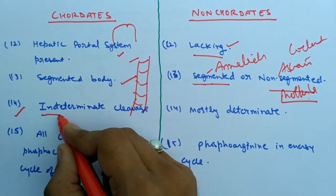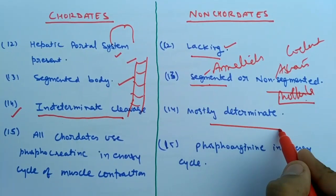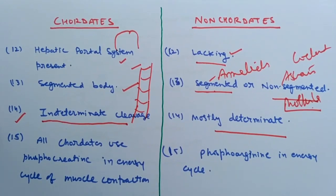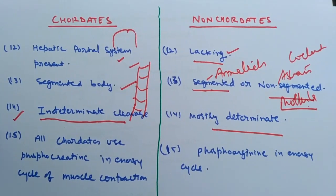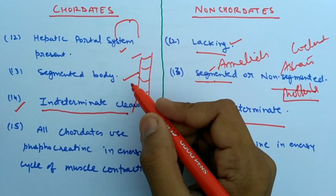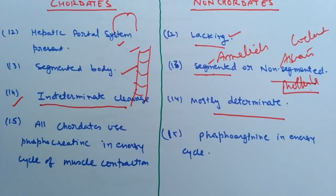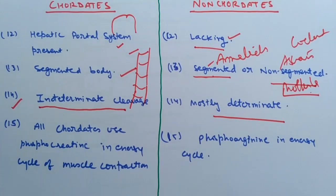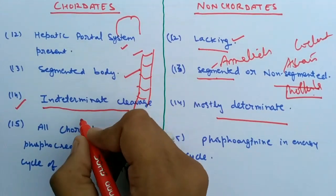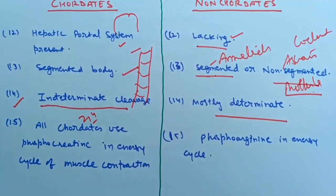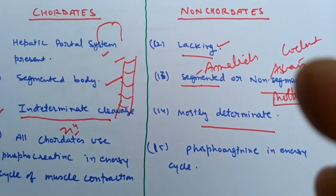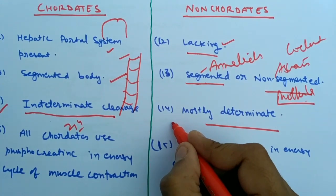The next difference is the cleavage type. In chordates, cleavage is indeterminate — from the very beginning when the zygote divides, the fate of cells is not determined in early stages, so if a cell is separated at the two-cell or four-cell stage, it can differentiate into a different embryo. In non-chordates, the fate is determined from very early stages — a segregated single cell cannot form a whole organism.